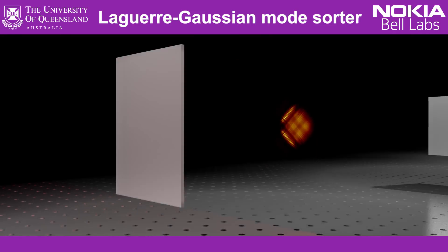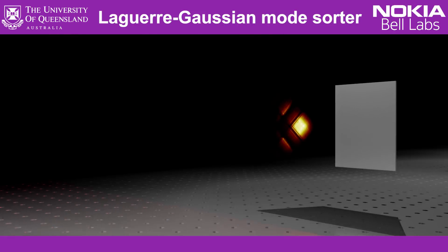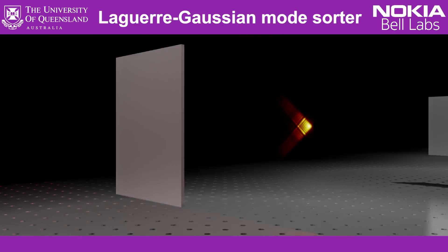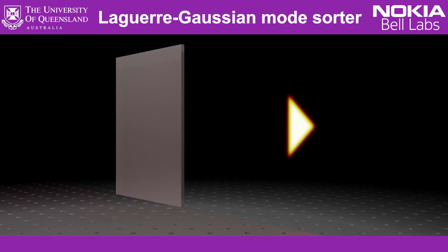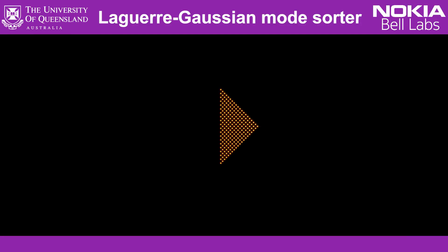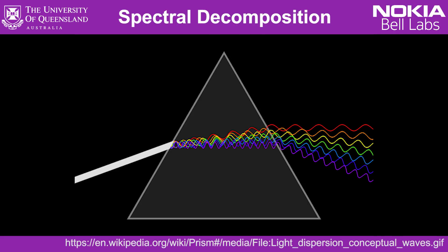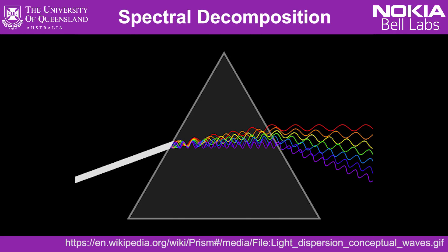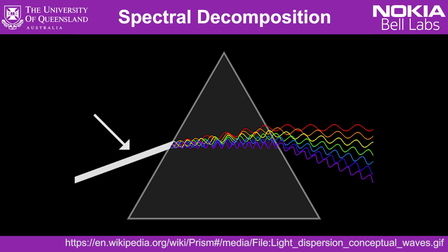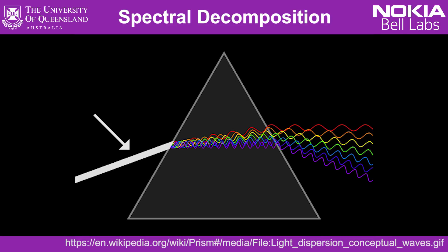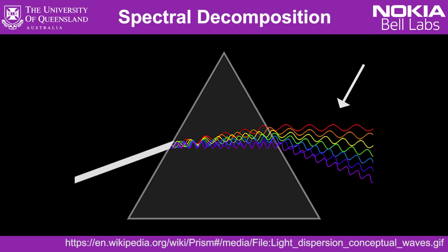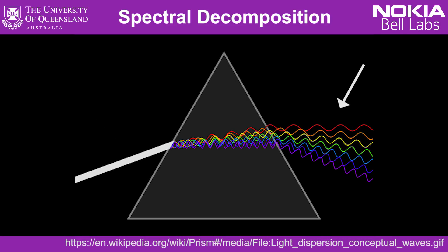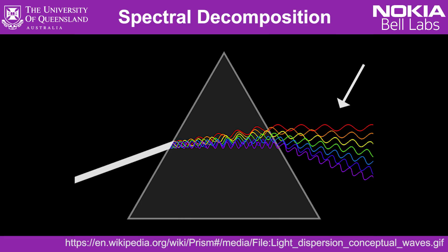We present here a device which can split up a beam of light into the shapes it's composed of. So what does that mean? To split up what we see as color, we could use something like this dispersive prism here. It'll take a beam, such as white light, and split it up into its spectral components, like the colors of the rainbow.